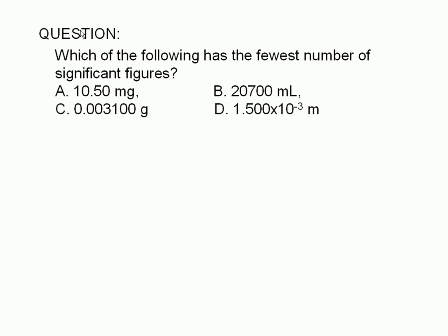Which of the following has the fewest number of significant figures? 10.50 milligrams, 20,700 milliliters, 0.003100 grams, or 1.500 times 10 to the negative third meter.